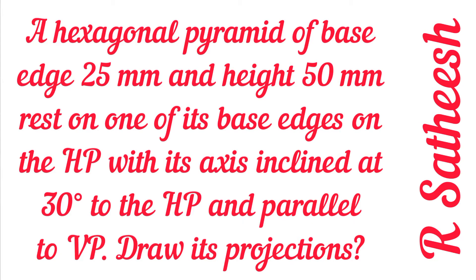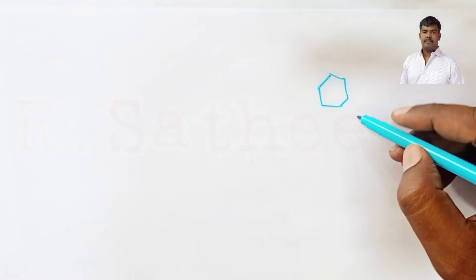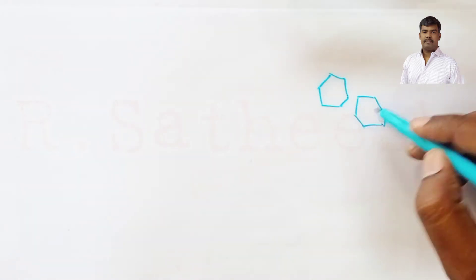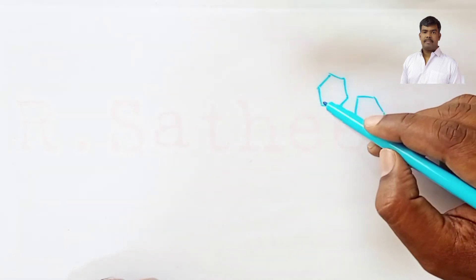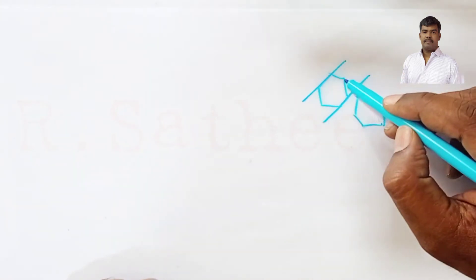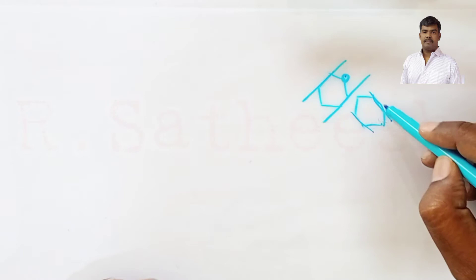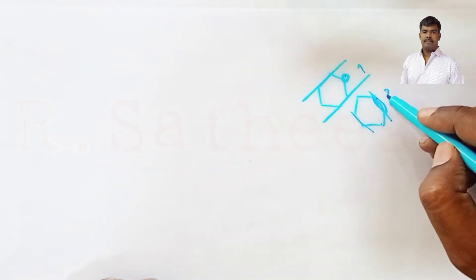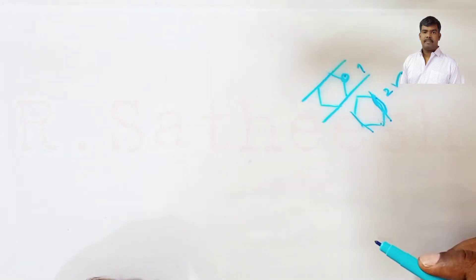This is a hexagonal pyramid while tilting the component, and one of its base edges is resting on HP. In a hexagonal pyramid the base has six edges. While tilting, one of its base edges is resting on HP — so instead of case number one where only a corner rests on HP, we select case number two as per our problem.